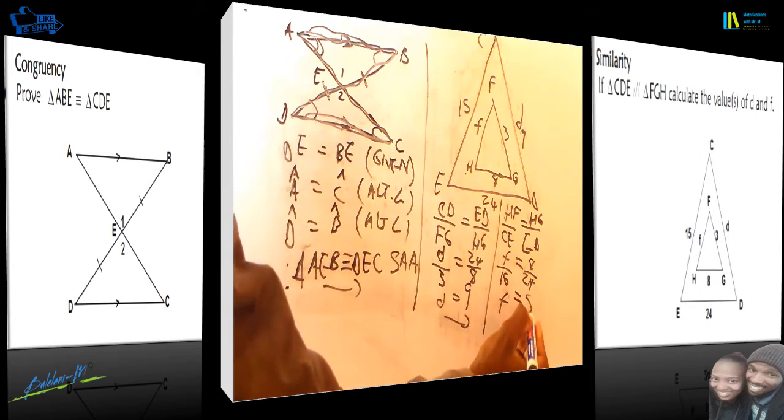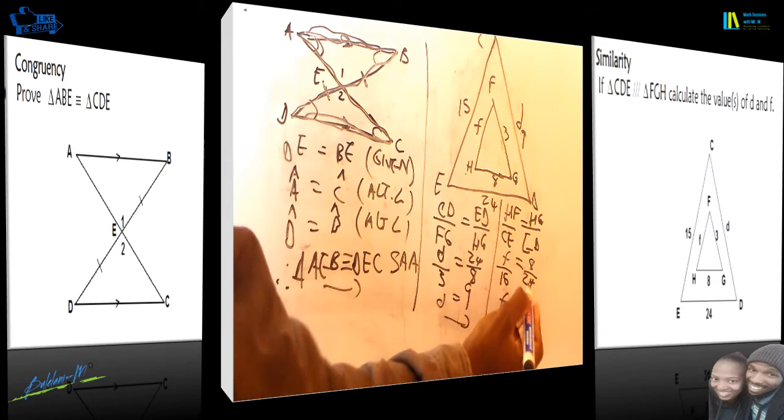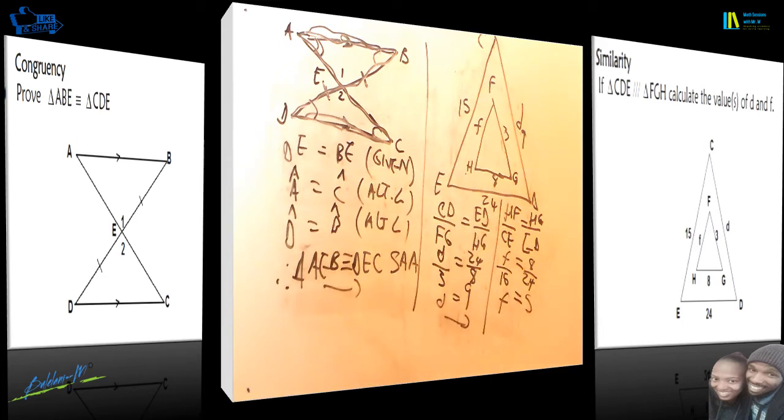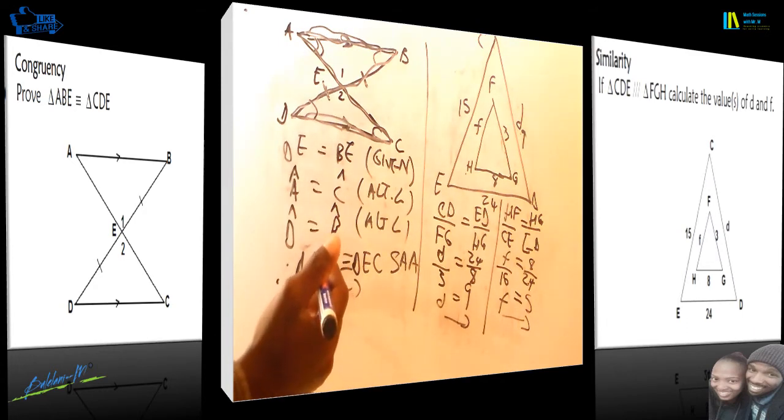F will be equal to 5, basically 15 divided by 3. So you find your d and you find your f. That is all when it comes to congruency and similarity.